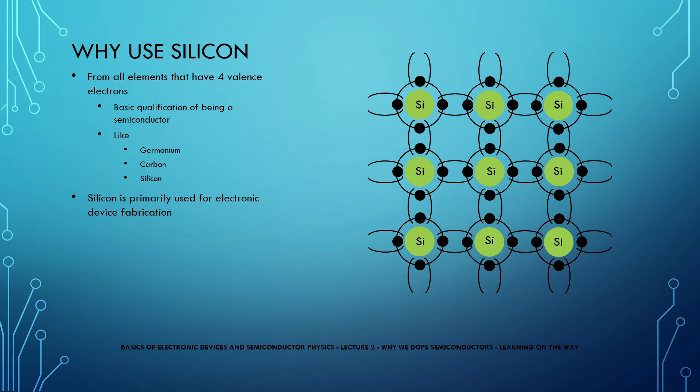Apart from being a semiconductor, silicon is widely abundant. In fact, it is the most common element found in earth's crust. This makes silicon a very cheap option for electronic device fabrication.